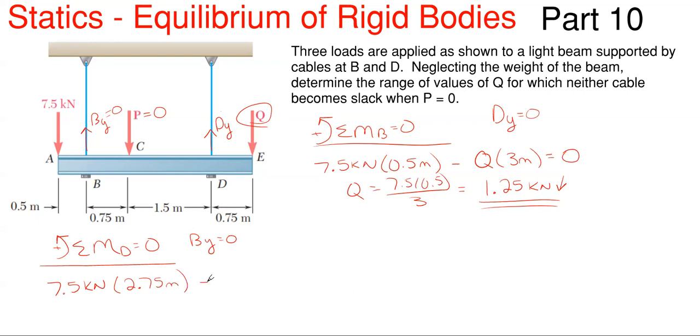And then we will have Q. It will still be rotating clockwise, this time clockwise about D, and its distance to D will be 0.75 meters. And since we're taking BY equal to 0, we're going to set this entire equation equal to 0.